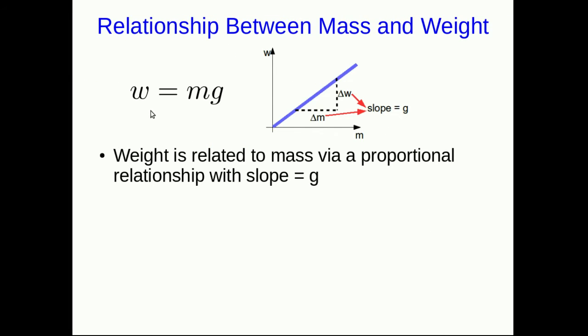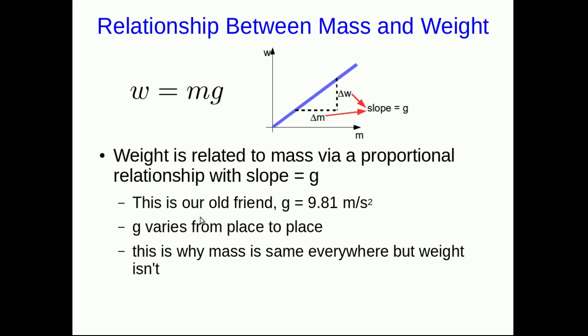And so now we see that this relationship between weight and mass is a proportionality relationship. The weight is related to the mass by a straight line relationship with slope g. And this g is the g we've met, acceleration due to gravity. So on earth, approximately 9.81 meters per second squared. But remember that it varies from place to place. And that's why, even though mass is the same everywhere, weight isn't. Because for example, on earth, g is 9.81 meters per second squared. And so that gives you the slope of this relationship. But on the moon, it's only about 1.63 meters per second squared.